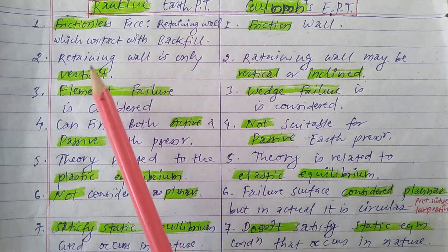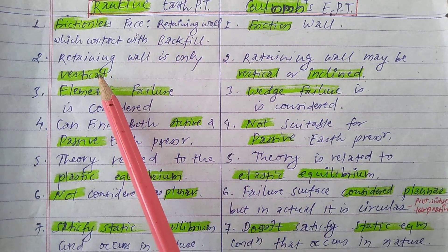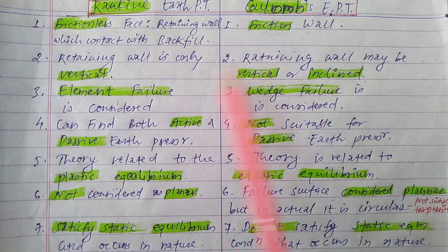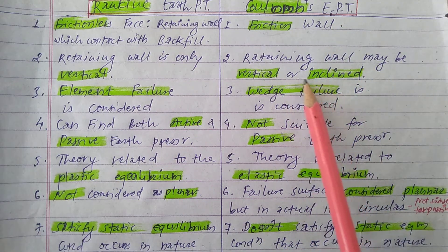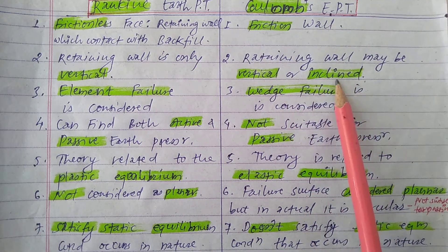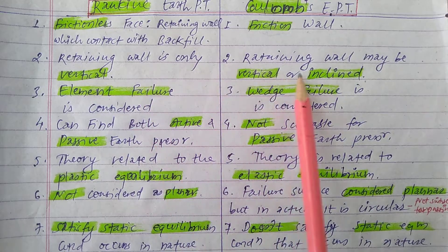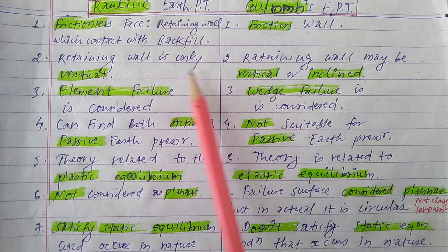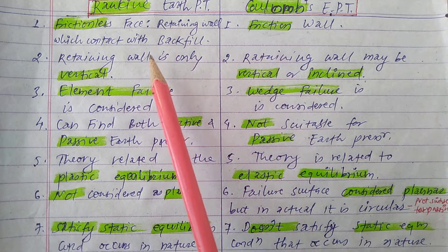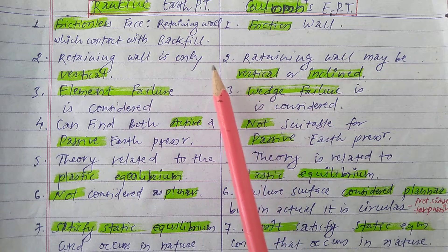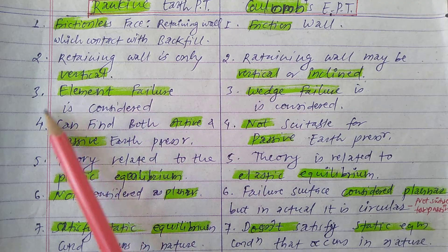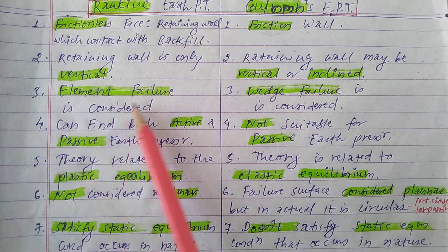Second difference: in Rankine's earth pressure theory, the retaining wall is only vertical. But in Coulomb's earth pressure theory, the retaining wall may be vertical or inclined. This is also one of the most important basic differences between Rankine's and Coulomb's earth pressure theory.